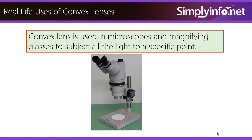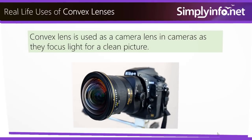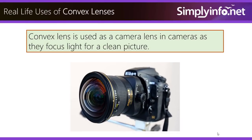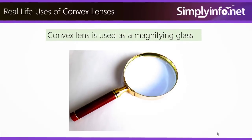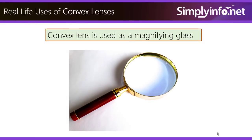Convex lenses are used in microscopes and magnifying glasses to subject all the light to a specific point. They are also used as camera lenses in cameras, as they focus light for a clean picture. Additionally, convex lenses are used as magnifying glasses.